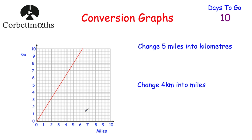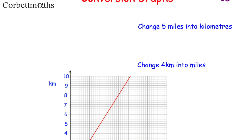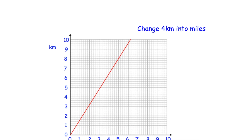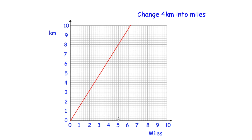Here we've got a conversion graph with miles along the bottom and kilometres going up vertically. We've been asked to use the graph to convert five miles into kilometres, and also to convert four kilometres into miles. Press pause now and think about how you would do that. So I've made the graph a bit bigger — for five miles into kilometres, I'd get my ruler and pencil, go to five miles, draw up to the line, then go across.